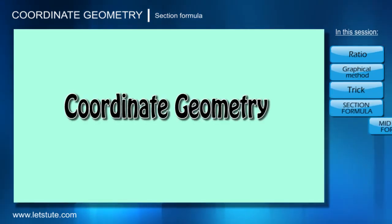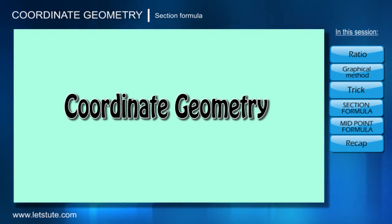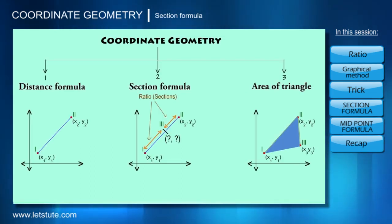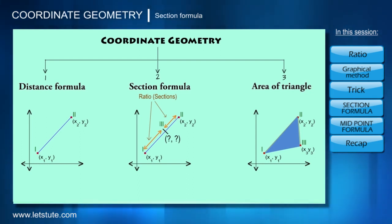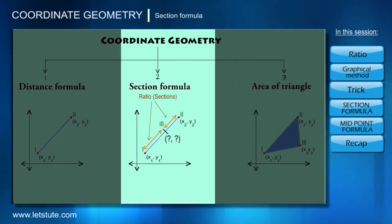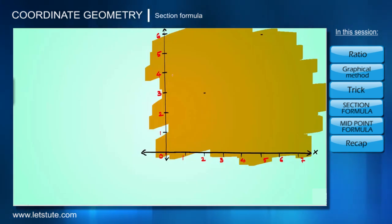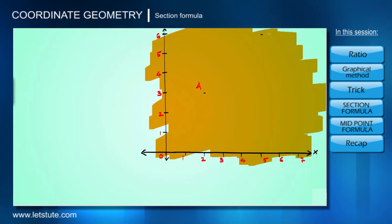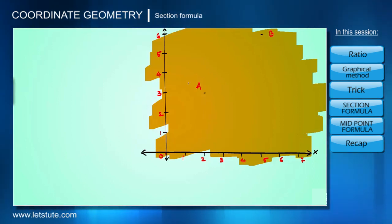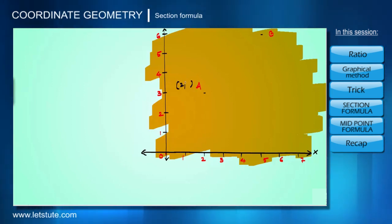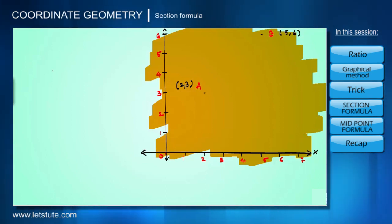Hello everyone, welcome to this session of coordinate geometry. We are going to learn three important concepts under this title, and today we are going to concentrate only on the second concept, that is the section formula. For that, let's consider two towns, say town A and town B, and let's say we know the locations — that is, coordinates — for these two towns. Let's say coordinates for A are (2, 3) and coordinates for B are (5, 6).